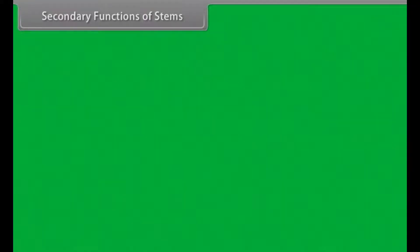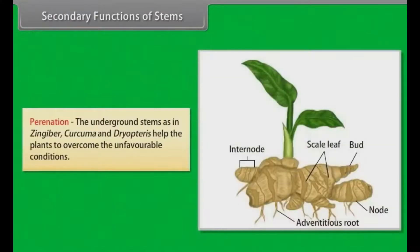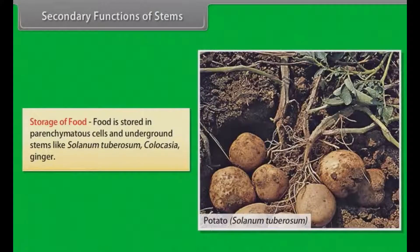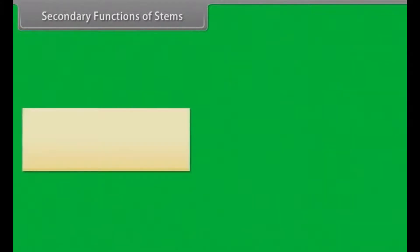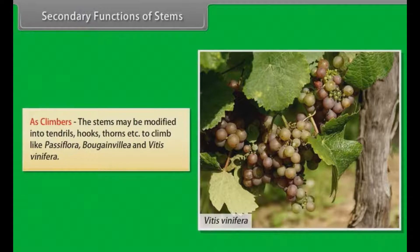The secondary functions of stems include: perennation — the underground stems as in Zingiber, Curcuma, and Dryopteris help the plants to overcome unfavorable conditions; storage of food — food is stored in parenchymatous cells and underground stems like Solanum tuberosum, Colocasia, and ginger; and as climbers — the stems may be modified into tendrils, hooks, thorns, etc. to climb, like Passiflora, Bougainvillea, and Vitis vinifera.